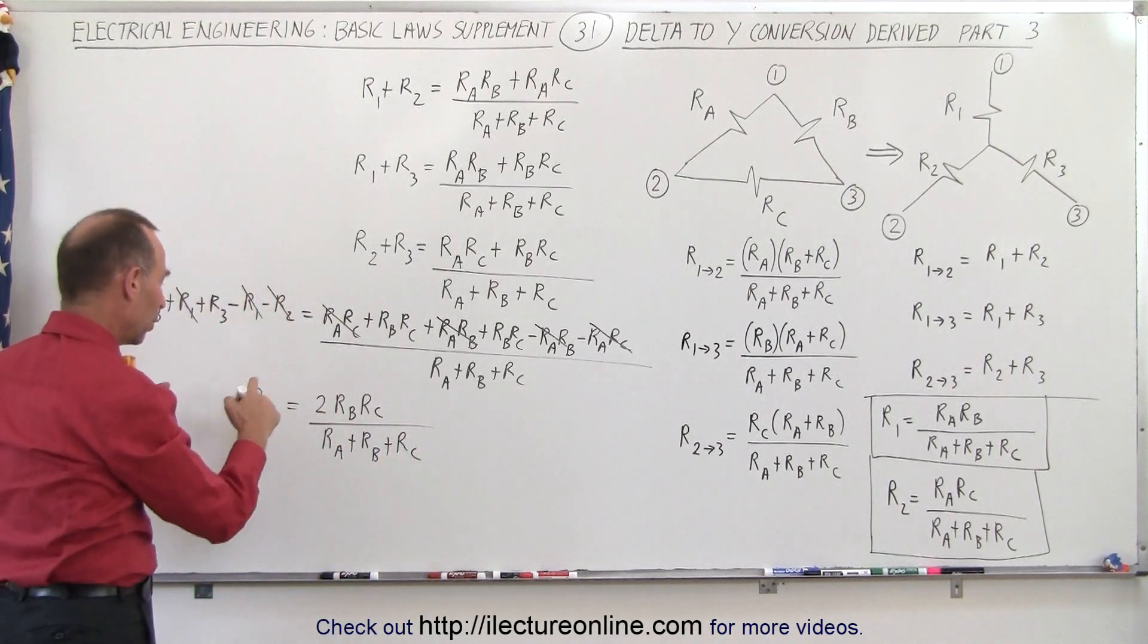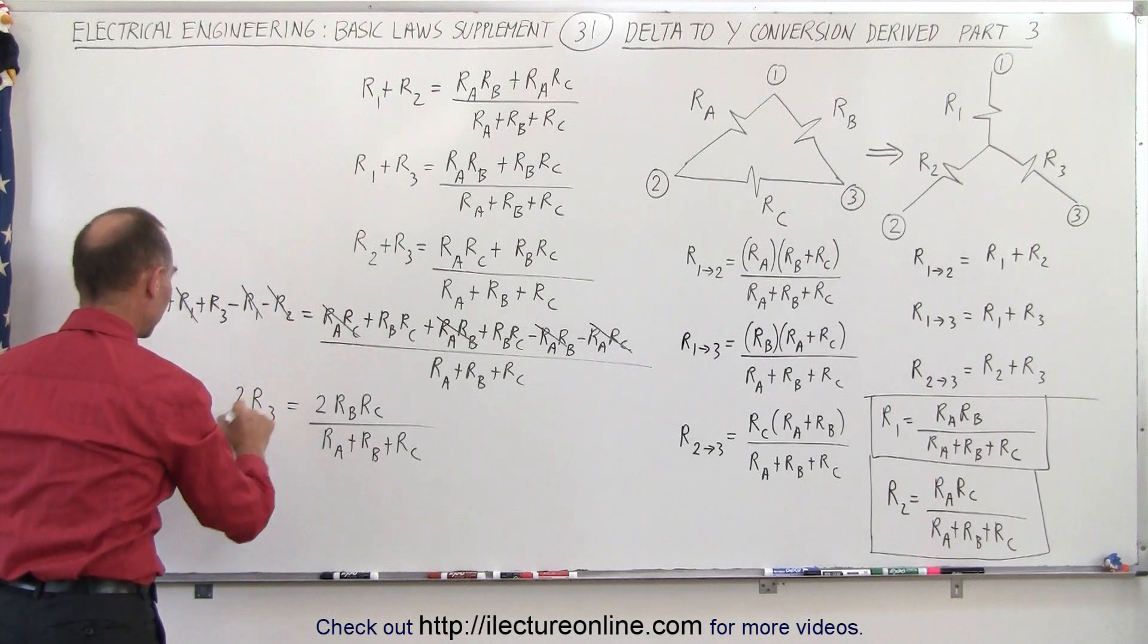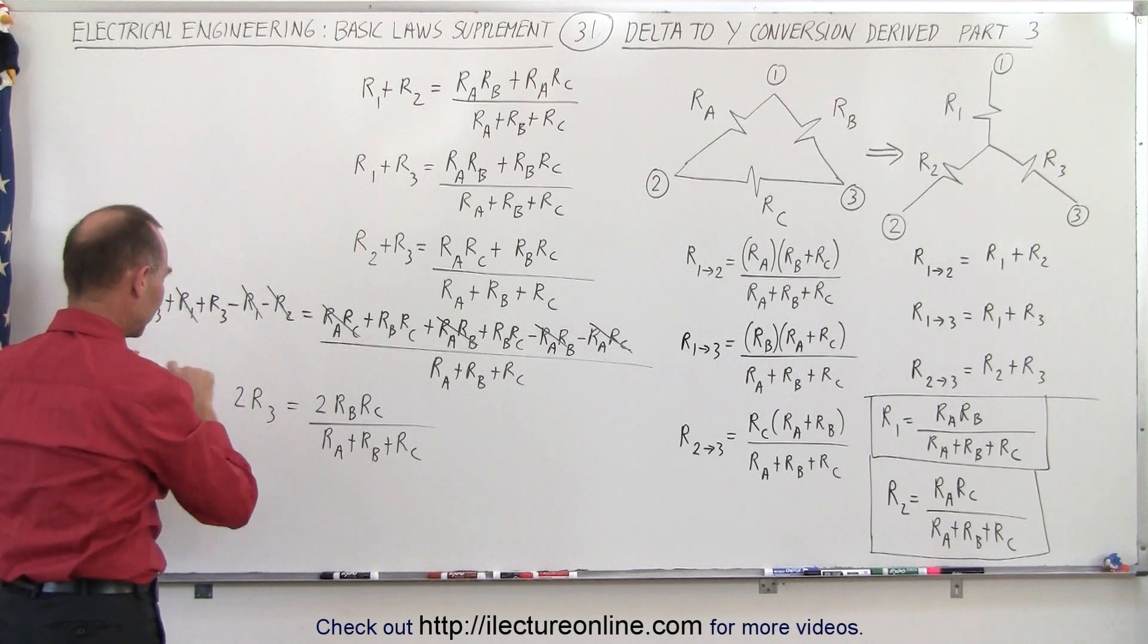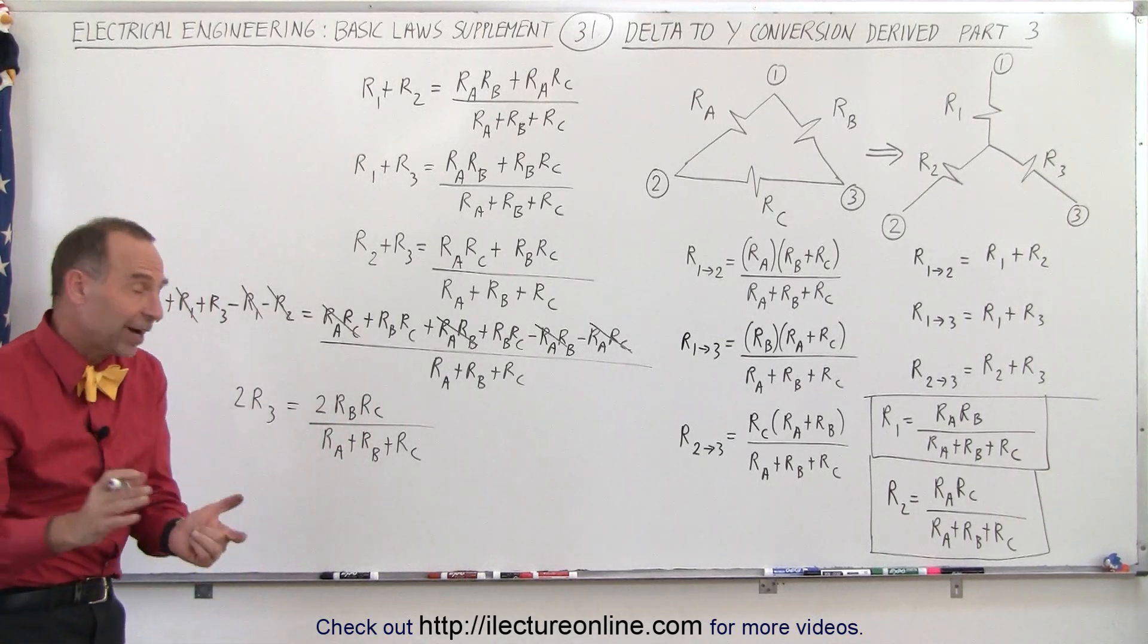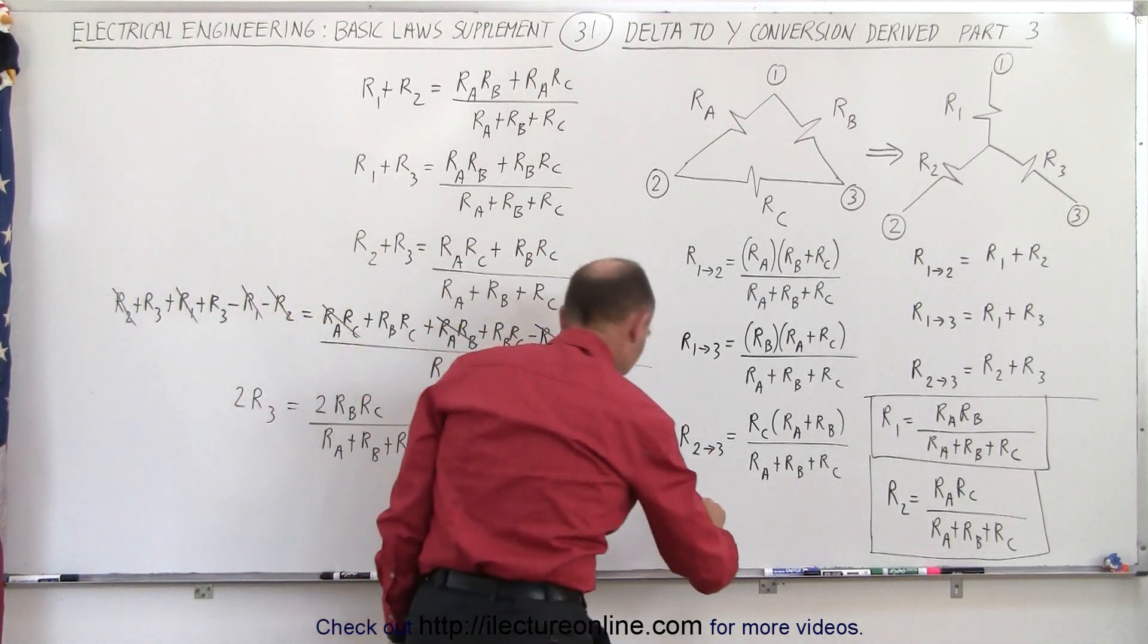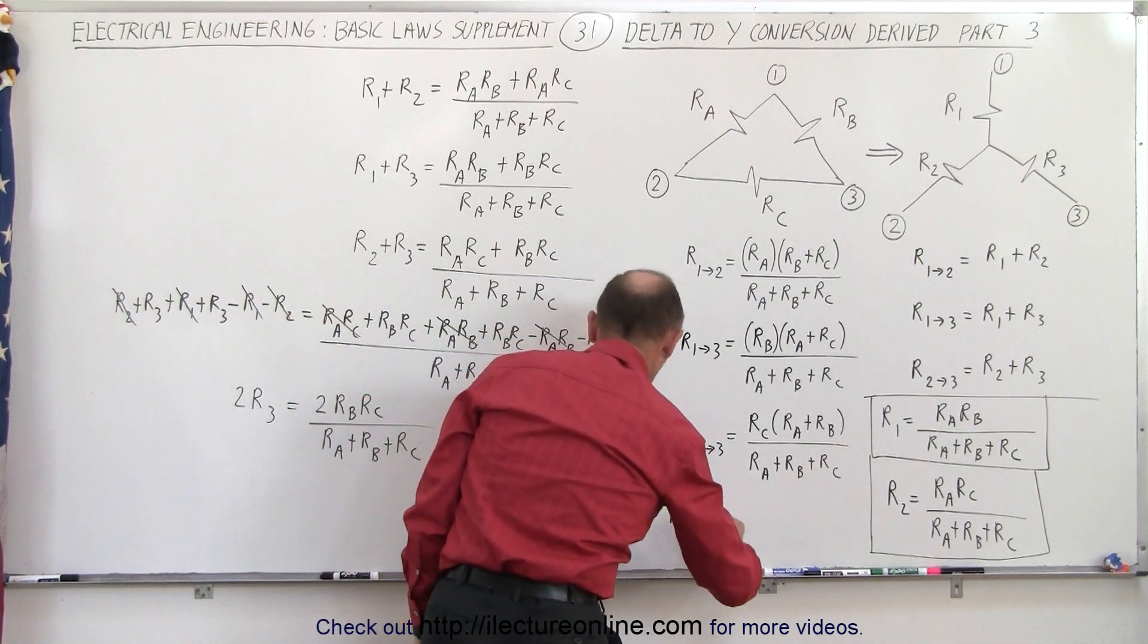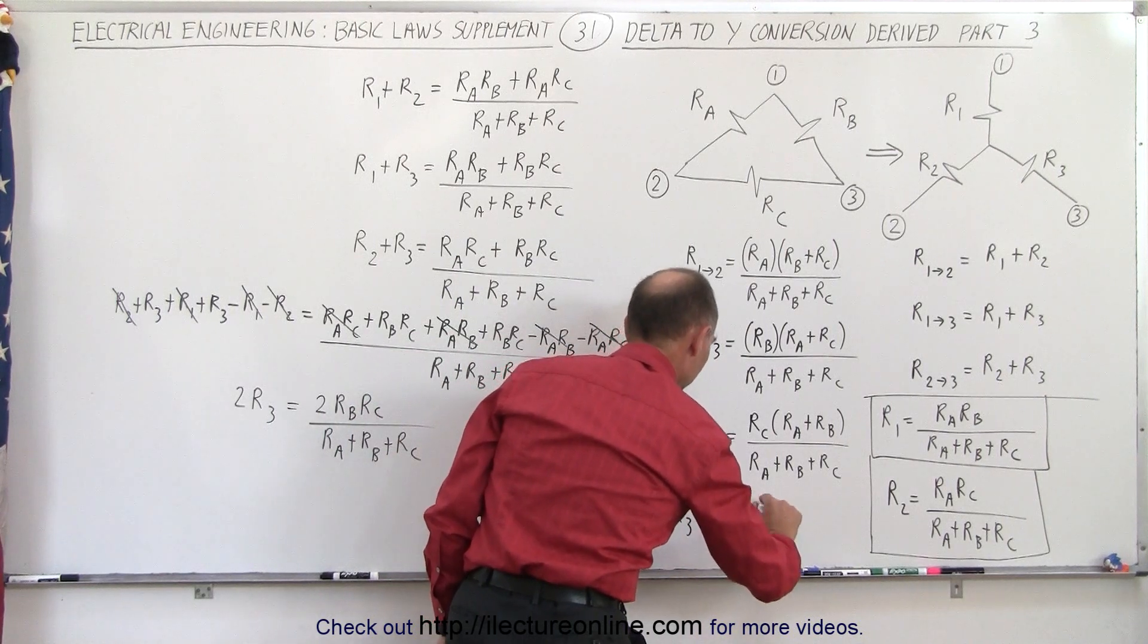And finally, wait a minute, that's not a three, that should be a two because there's only two of them not three. So 2R3 equals 2RB RC divided by that, and then we divide both sides by two and that means we end up with R3 equal to RB RC divided by the sum.